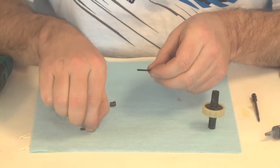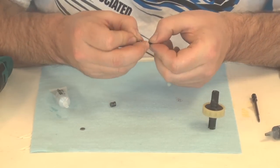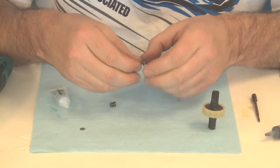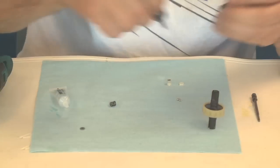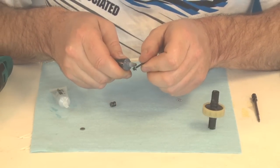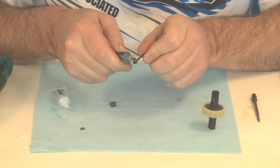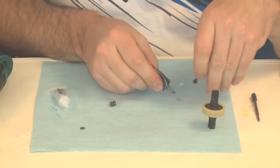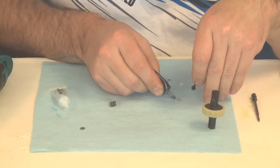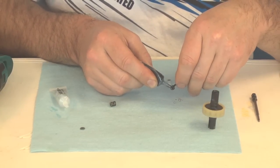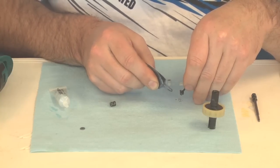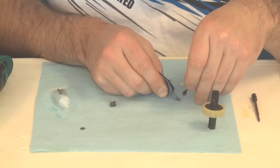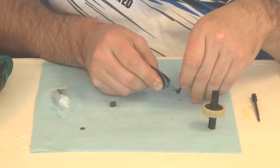And then take our thrust screw, put the first washer on, and take some black grease, run that around the screw. And then I take the applicator, pick up one ball, stuff it on there. Kind of a tricky thing, that's why the grease helps hold it in place.